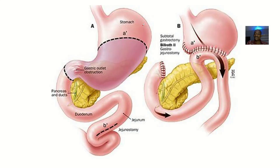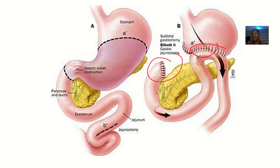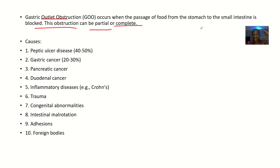If you know the anatomy of the stomach, you can start reasoning out the complications. Here we're showing a surgery — a gastrojejunostomy — where you link the stomach directly to the jejunum because there's a blockage of the duodenum.